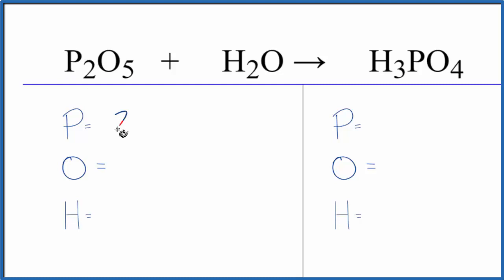We have two phosphorus atoms, five oxygen atoms, plus don't forget there's an oxygen atom here in the water. So let's put one there. So we have a total of six. Hydrogens we have two. On the product side we have one phosphorus, four oxygens, and then three hydrogen atoms.